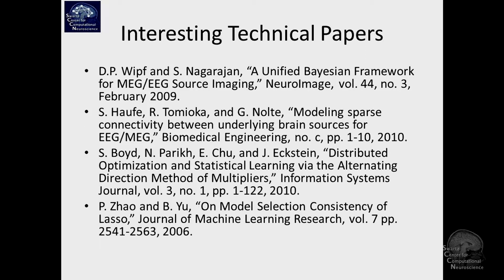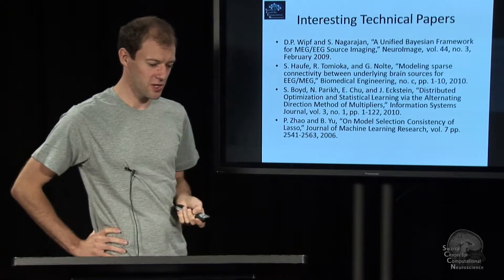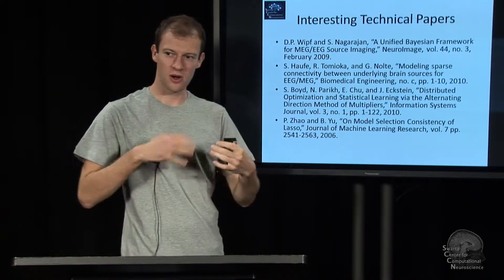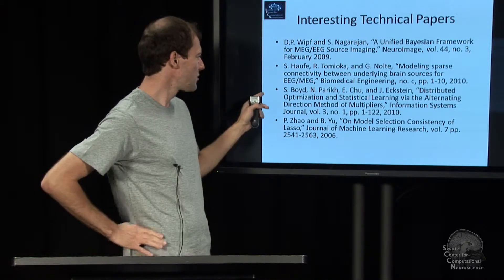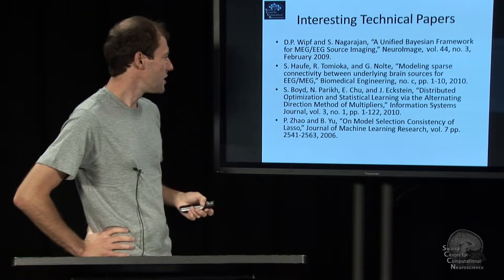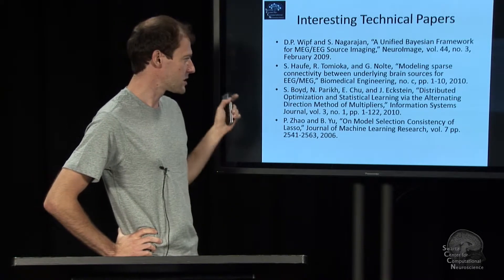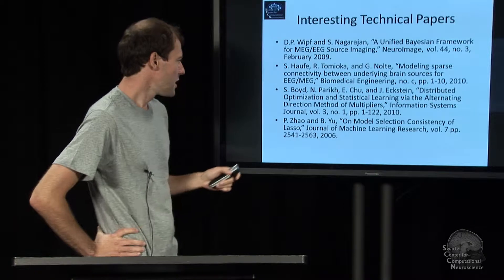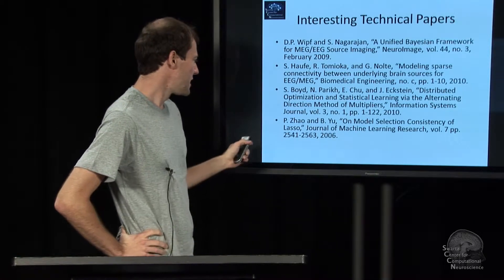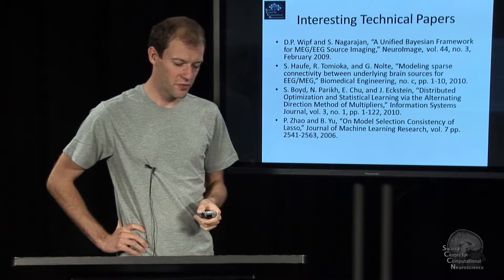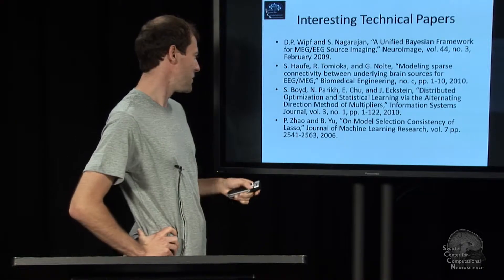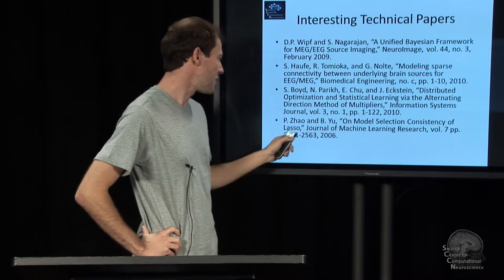There is a very good paper on connectivity estimation with EEG, with the idea of eventually moving to BCI applications, from Stefan Hofer. There is also the paper on ADMM — the alternating direction method of multipliers, which is this optimization framework by Stephen Boyd et al. This is highly recommended; it's a 70-page monograph. And there is a paper on the virtues of sparsity by Zao and Yu on model selection consistency of LASSO.